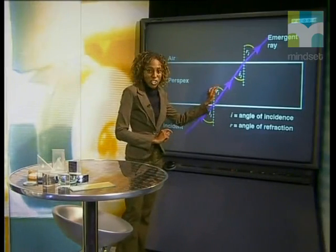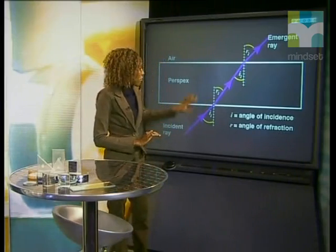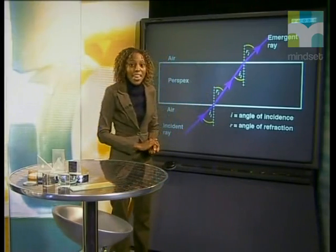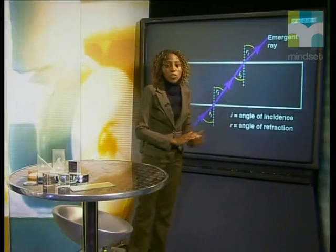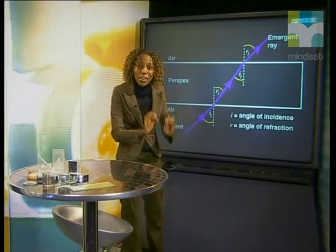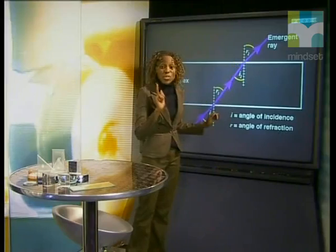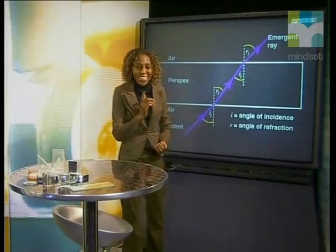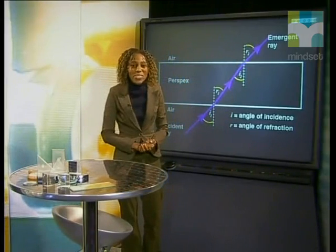However, when light moves from a medium of high optical density to a medium of low optical density, the refracted ray moves away from the normal because light is speeding up. Here, the angle of incidence is smaller than the angle of refraction. Now with those concepts in mind, let's go back to the lab.